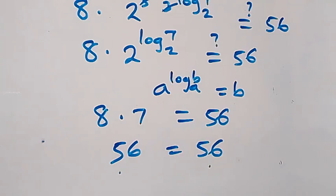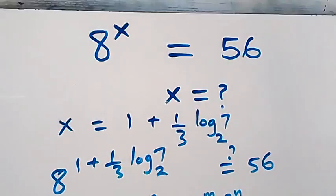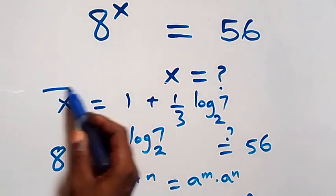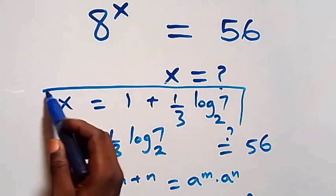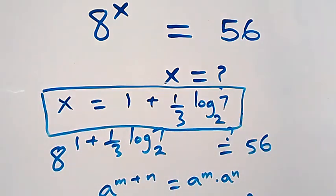Hence we conclude that x equals 1 plus one-third·log₂7 satisfies the given problem. Thank you for watching — don't forget to subscribe for more videos, turn on the notification bell, share this video, give it a thumbs up, and see you next class.